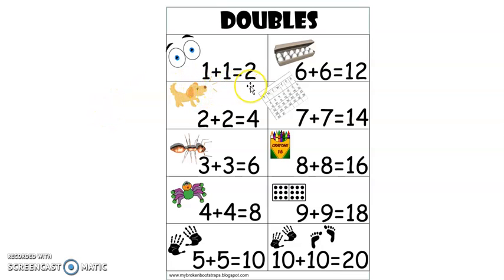1 plus 1 is 2. 2 plus 2 is 4. 3 plus 3 is 6. 4 plus 4 is 8. 5 plus 5 is 10. 6 plus 6 is 12. 7 plus 7 is 14. 8 plus 8 is 16. 9 plus 9 is 18. 10 plus 10 is 20. Good job friends.